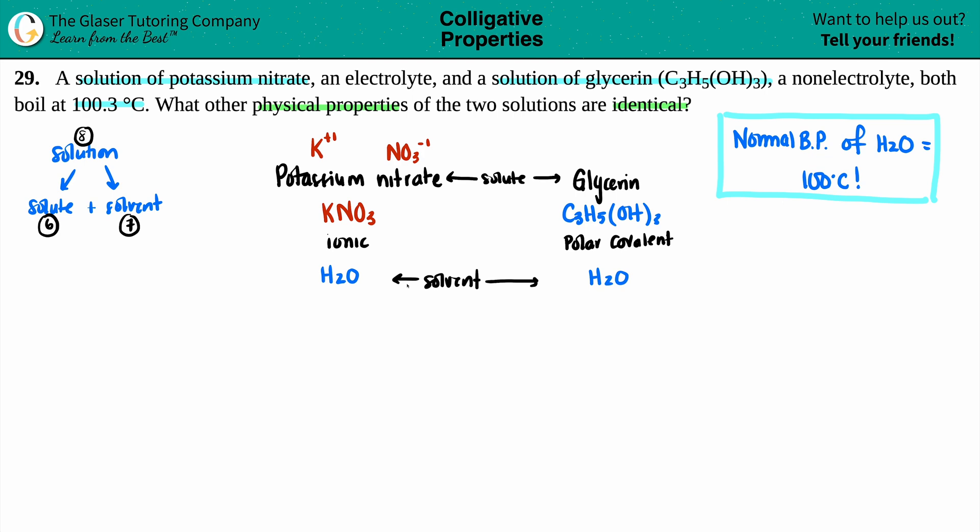And boiling point is very reliant on your solvent, not necessarily your solute, a little bit, but it's more reliant on your solvent. Now, in this case, we have an ionic compound coming in with H2O. Keep in mind that H2O is polar as well.